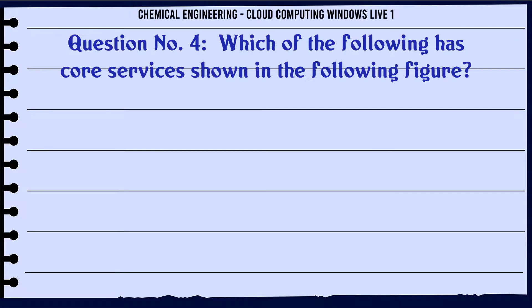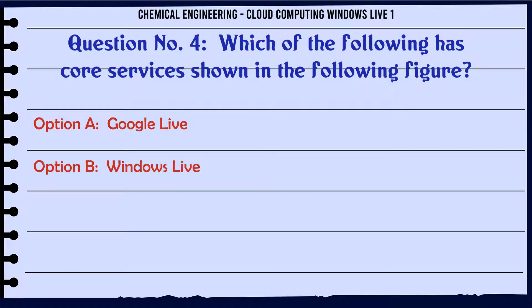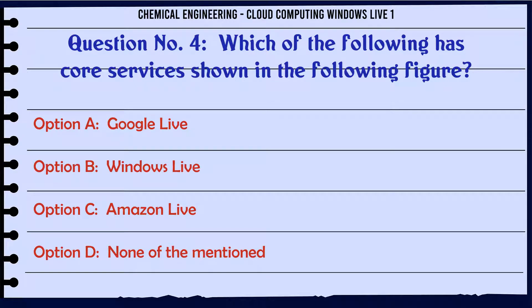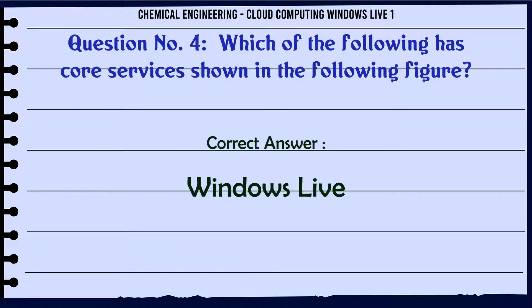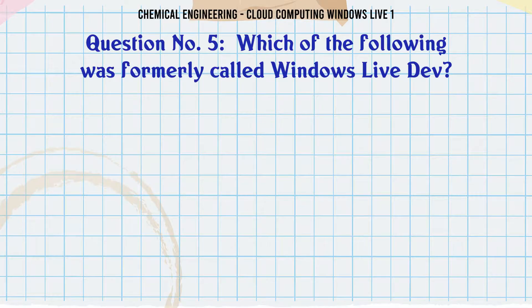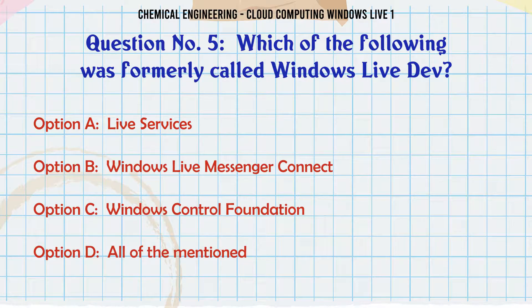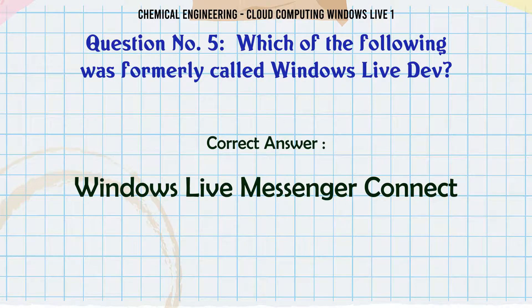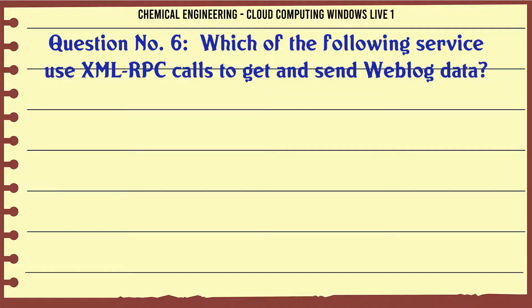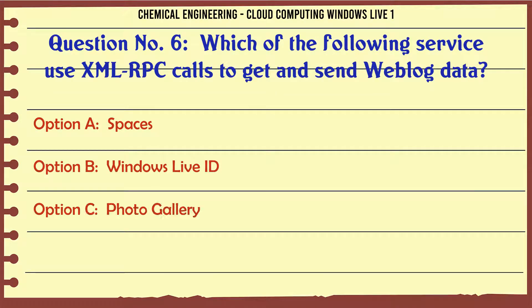Which of the following has core services shown in the following figure? A. Google Live. B. Windows Live. C. Amazon Live. D. None of the mentioned. The correct answer is Windows Live.